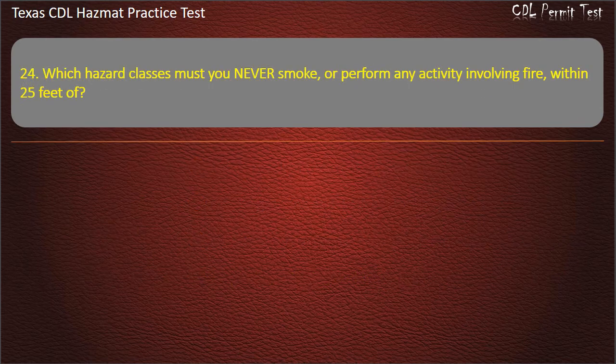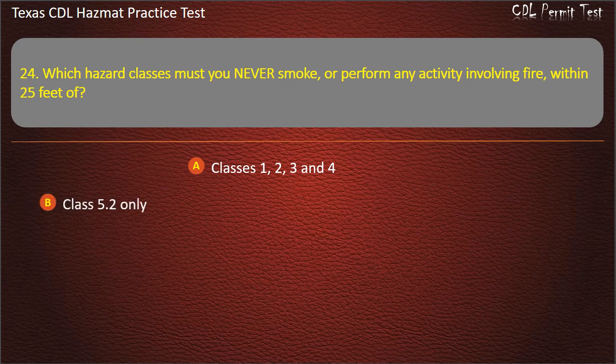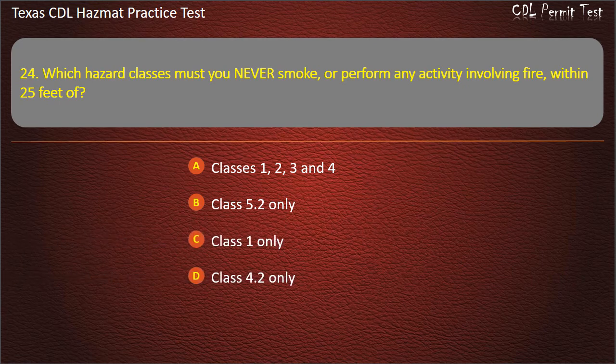Question 24: Which hazard classes must you never smoke or perform any activity involving fire within 25 feet of? Classes 1, 2, 3, and 4. Class 5.2 only. Class 1 only. Class 4.2 only. Answer: Classes 1, 2, 3, and 4.